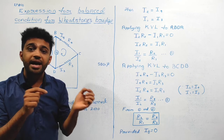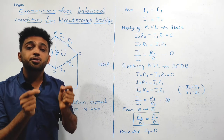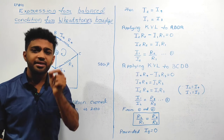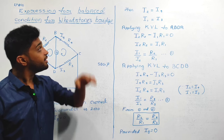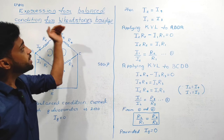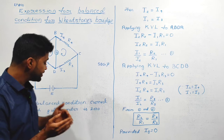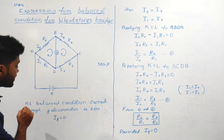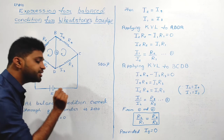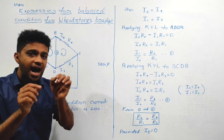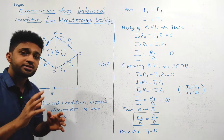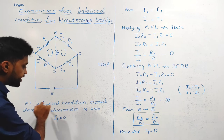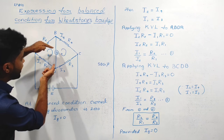The Wheatstone bridge balanced condition: the current through the galvanometer is zero. Galvanometer deflection is zero at the balanced condition of the Wheatstone bridge. At balanced condition, current through the galvanometer IG is equal to zero.